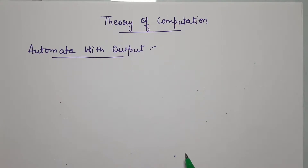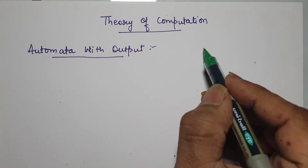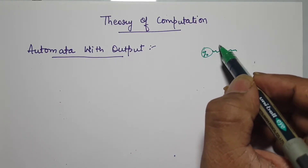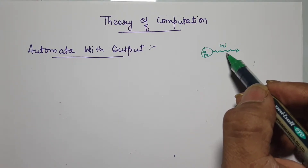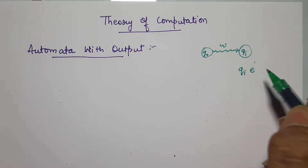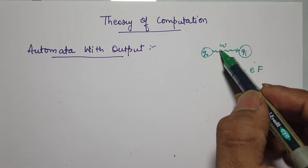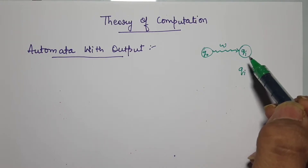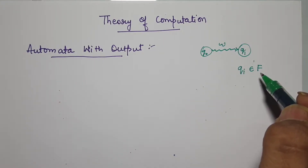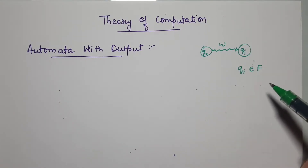The automata that we have seen in the previous video belongs to a category of finite automata. That means it has a finite number of steps, but that automata does not give you any output. You had a starting state Q0 in which you give some input — a word — and with some number of transitions that automata will lead you to some state QI. If that state QI is a member of the set of final states, then we say that this particular word W is accepted by the automata. If QI does not belong to the set of final states F, then we say that the word W is not accepted by this given automata.